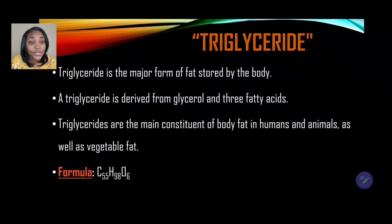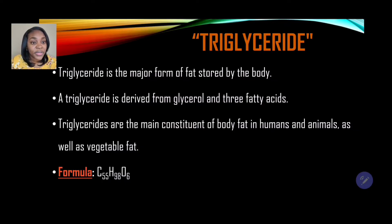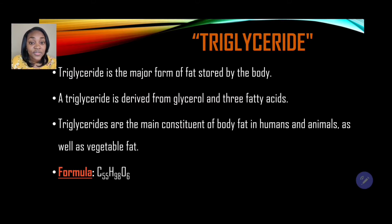Triglyceride is a major form of fat stored by the body. A triglyceride is derived from a glycerol and three fatty acids. Triglycerides are the main constituents of body fat in humans and animals, as well as vegetable fat. The formula for triglyceride is C₅₅H₉₈O₆ — where C stands for carbon, H stands for hydrogen, and O stands for oxygen.